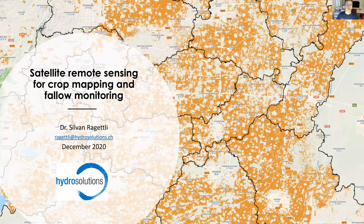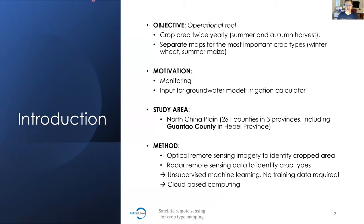Welcome to this seminar about satellite remote sensing for crop mapping and fallow monitoring. The objective of this work was to design an operational tool that can map crop area and the most important crop types twice yearly — for the summer and for the winter season. We call crops planted in autumn and harvested in early summer 'summer harvest crops,' and crops grown over summer are called 'autumn harvest crops.' The maps can also serve as input for groundwater models or irrigation calculators.